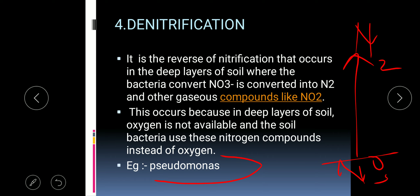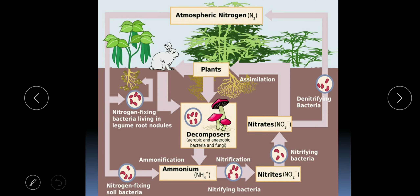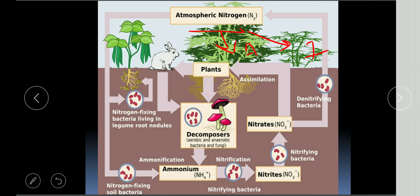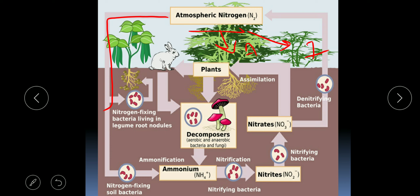To recap the nitrogen cycle: atmospheric nitrogen is fixed into the soil by three ways — atmospheric fixation, industrial fixation, and biological fixation by nitrogen-fixing bacteria. There are two types of nitrogen-fixing bacteria: symbiotic bacteria present in root nodules of leguminous plants, and free-living bacteria present in the soil like Azotobacter. When nitrogen is fixed by symbiotic association, it is directly made available to the plant.